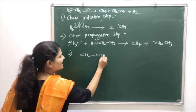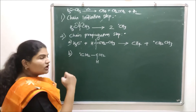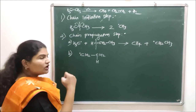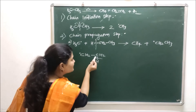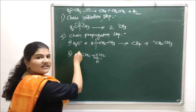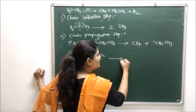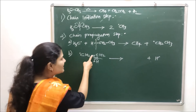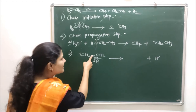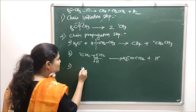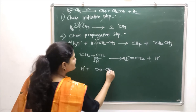In the next propagation step, the ethyl free radical (·CH₂CH₃) decomposes itself. The C–H bond is broken: one electron goes to the adjacent carbon, forming a C=C double bond, and the other electron is taken by hydrogen, which is released as a hydrogen atom (H·). This gives you the alkene molecule — ethene (CH₂=CH₂) — as a product.